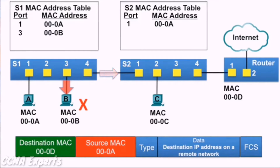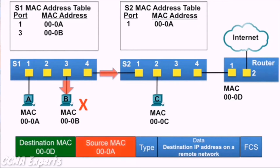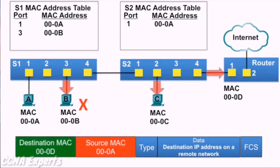Switch S2 receives the Ethernet frame and examines the source MAC address, which is in its MAC address table, so it also simply refreshes the five-minute timer. It examines the destination MAC address of the frame, which is not in its MAC address table, so it floods it out all ports.